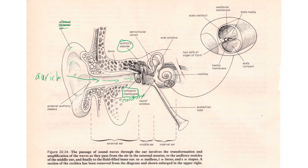The stapes is attached to the cochlea, tapping on its side. There's fluid inside — just like tapping a finger on a bowl filled with water sets up vibrations. Where the base of the stapes attaches is called the oval window.